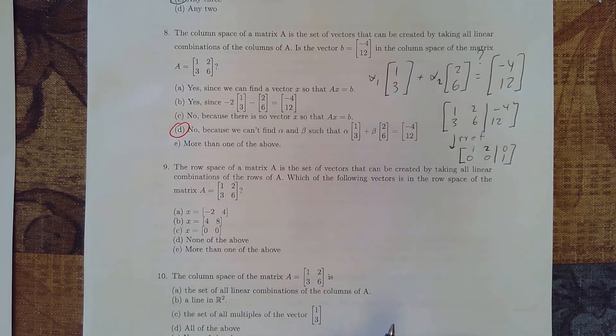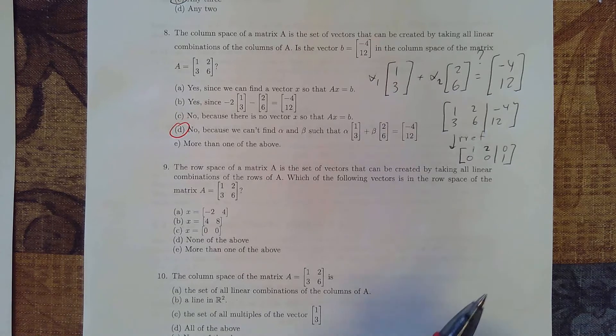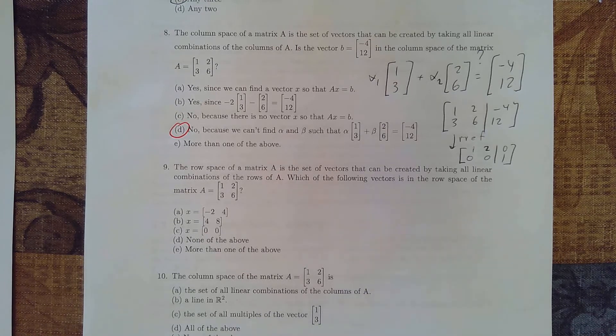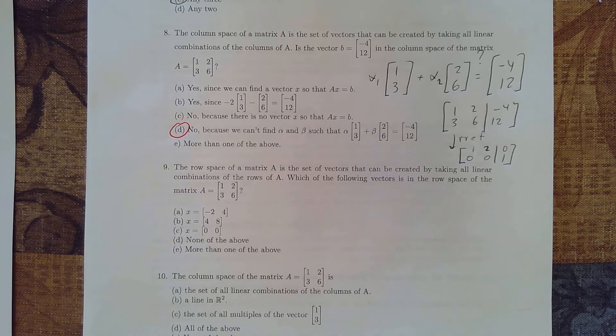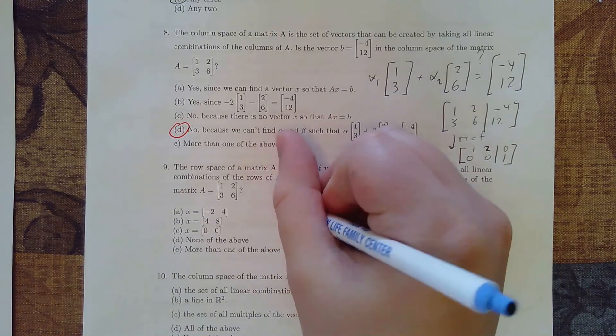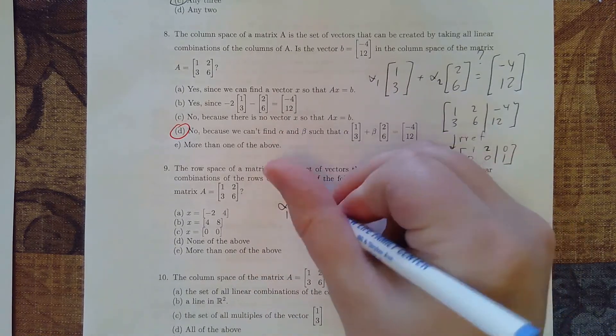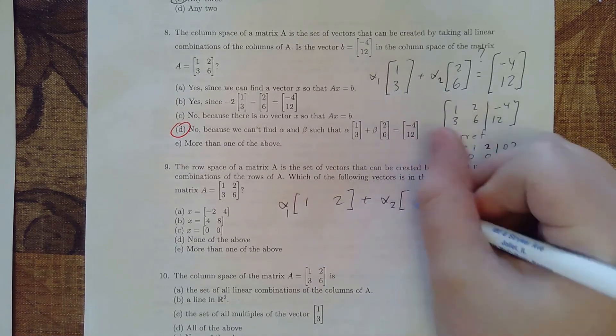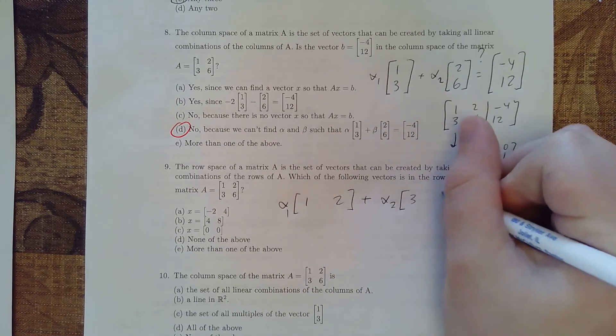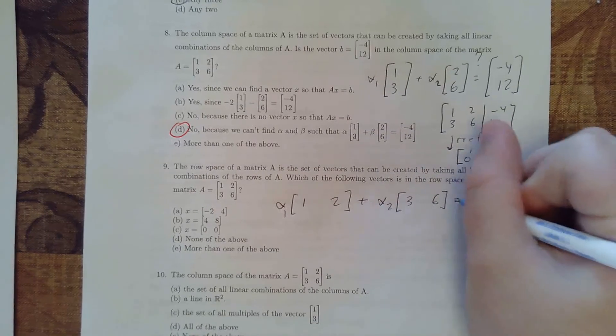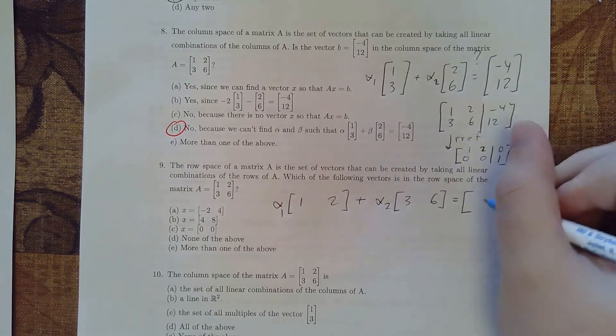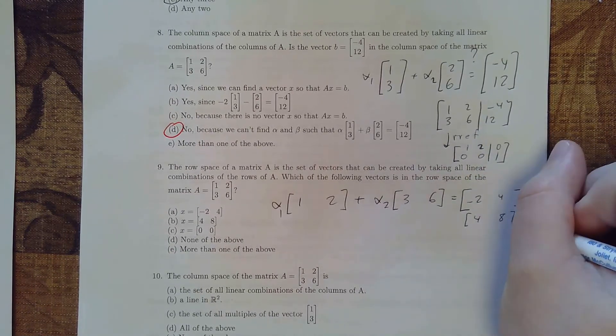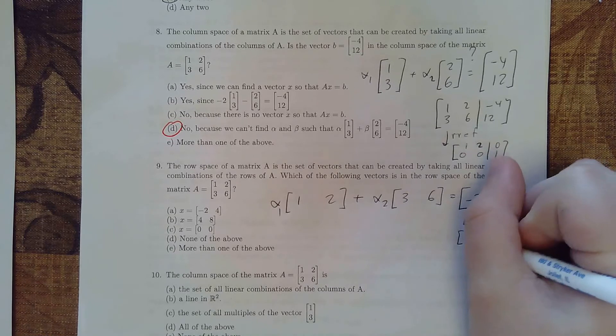So let's talk about then the row space. So the row space is asking the question of which of these vectors can be created by taking linear combinations of the rows. So now we want to know what things are going to be alpha 1 times 1, 2 plus alpha 2 times 3, 6. We want to know that for each of the following vectors. We want to know that for negative 2, 4. We want to know that for 4, 8. And we want to know it for 0, 0.